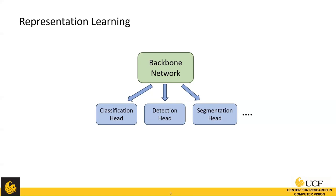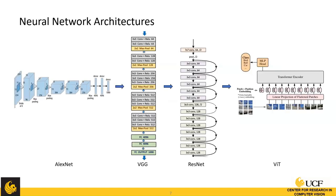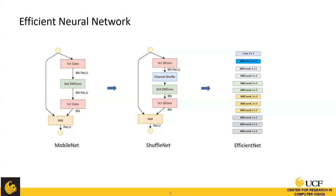To improve representation learning, there are two main directions in the literature: designing new neural network architectures, and designing new learning methods to train the network. Over the past 10 years, we've seen fast evolution of architectures — from AlexNet, which first won the ImageNet challenge, to VGG and ResNet. Those networks achieved great success but have large model sizes, so efficient networks like MobileNet, ShuffleNet, and EfficientNet were proposed using depth-wise separable convolutions.